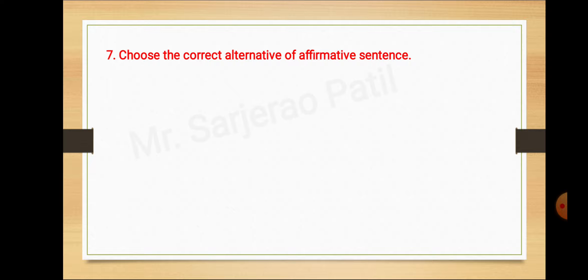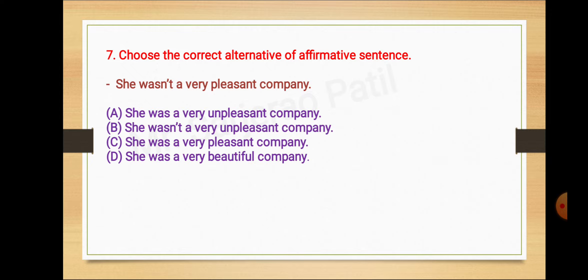He was not a very pleasant company. A she was a very unpleasant company, B she wasn't a very unpleasant company, C she was a very pleasant company, D she was a very beautiful company. The answer is she was a very unpleasant company.